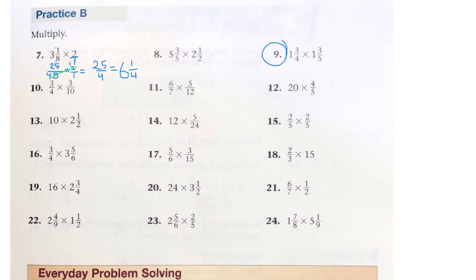Let's look at 9. So we have 4 times 1 is 4. Plus 3 is 7. And then the original denominator goes underneath that, which is 4.